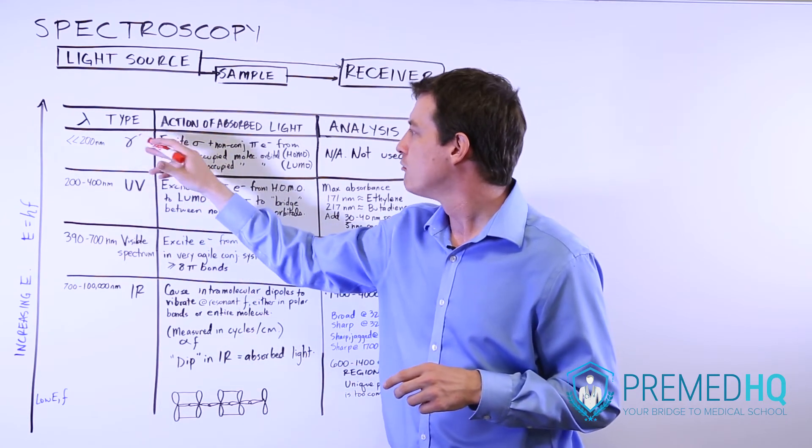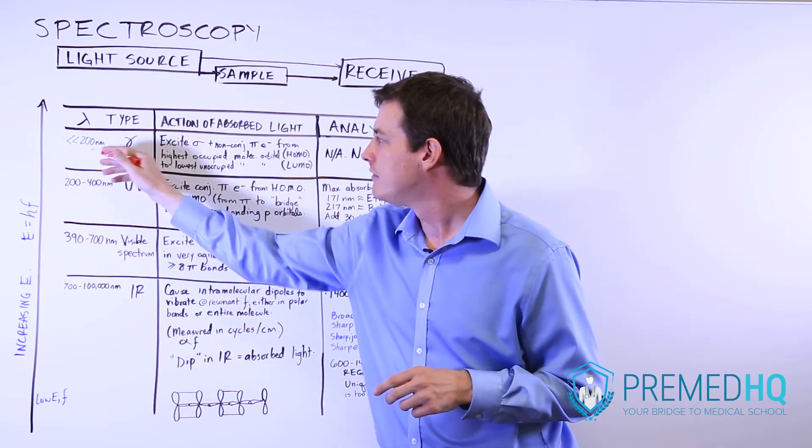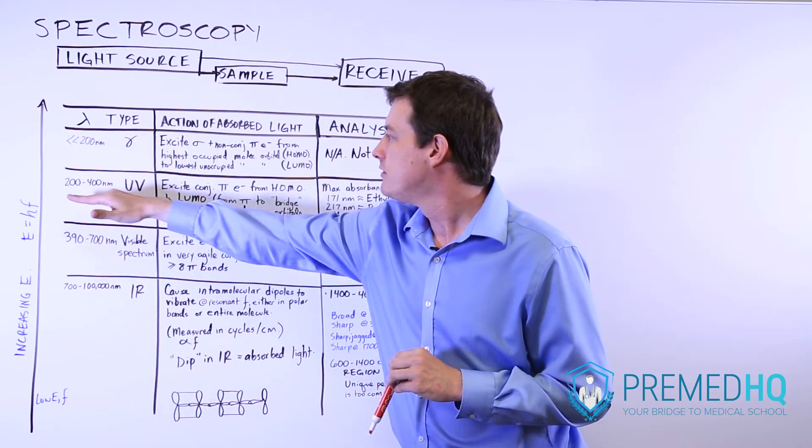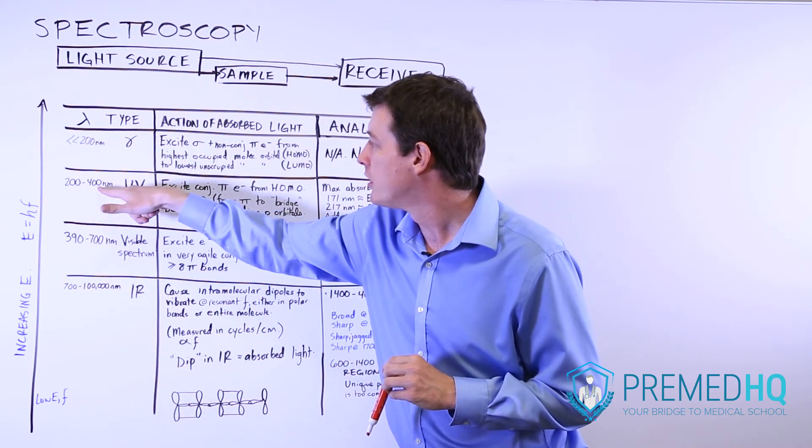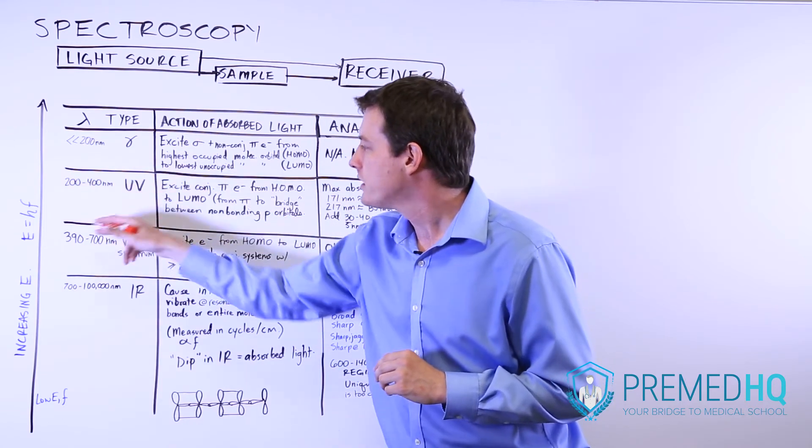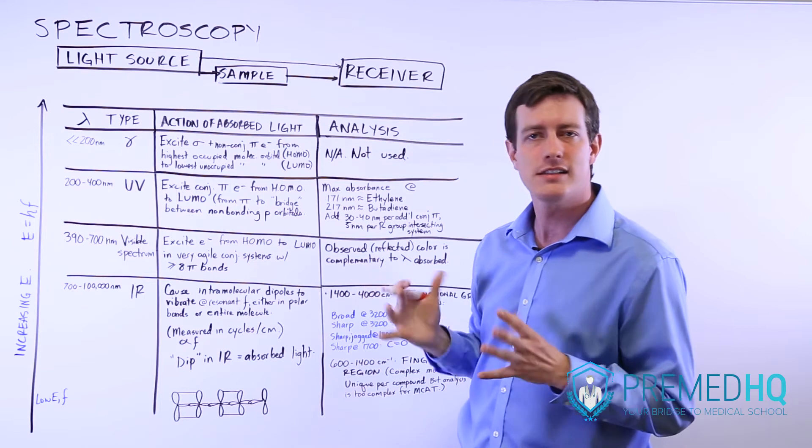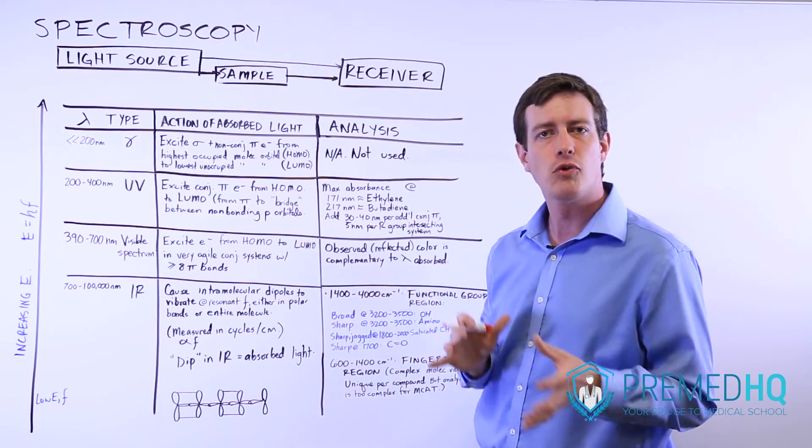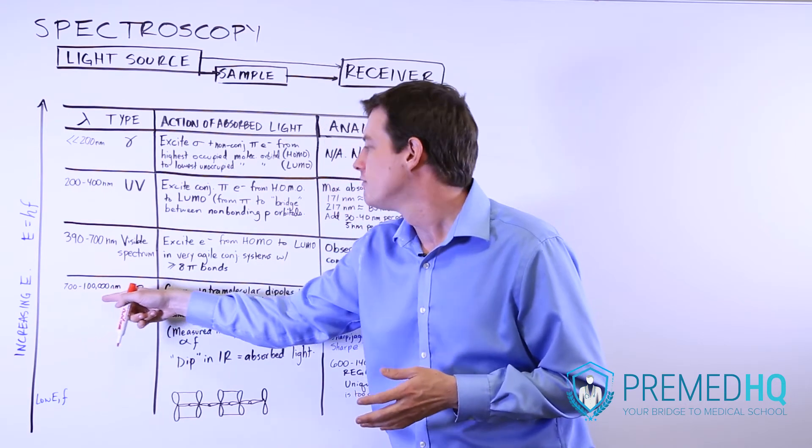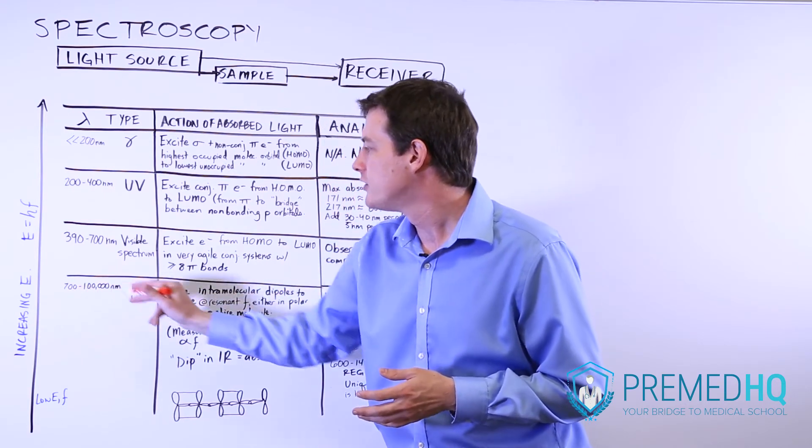Here we're in the gamma ray area, and that has a very small wavelength of less than 200 nanometers. Then we move down to ultraviolet, which is in the 200 to 400 nanometer range. Then you get into the visible light spectrum, which is 390 to 700, or you can say 400 to 700 nanometers. Then you get into the infrared region, which is 700 and above.